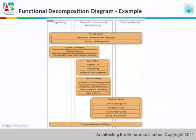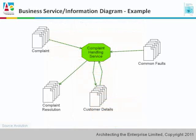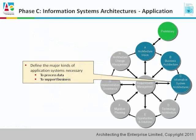Here is a functional decomposition diagram. The various organizations are in the yellow boxes, and the orange boxes show the functions and sub-functions, and how they relate to the organizations. The business service information diagram shows how information — in the sense of high-level data entities — relates to business services. So here in Phase C, we're going to be considering the application architecture and also the data architecture.